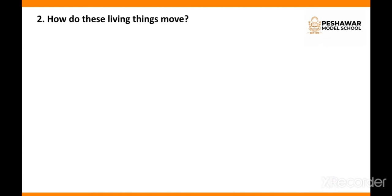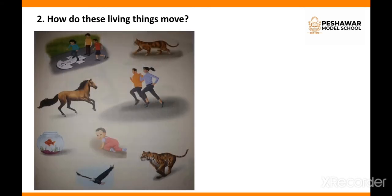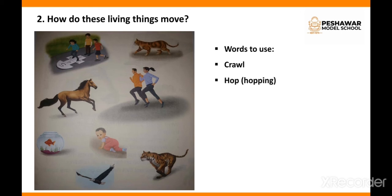How do living things move? There are a few words used for different types of movement. Number one is crawl — crawl is a type of movement that babies do normally; it is a two-foot and two-arm movement. Number two is hop — hopping means jumping with one foot and landing on the other.